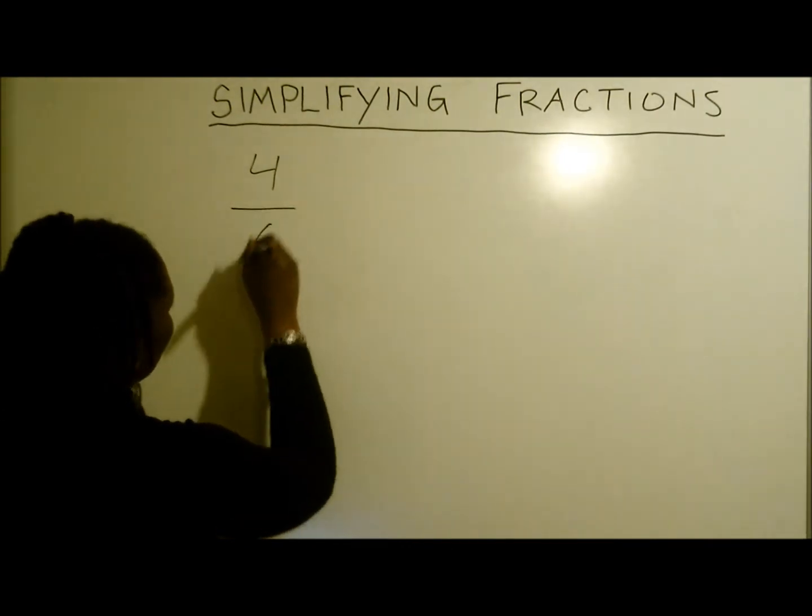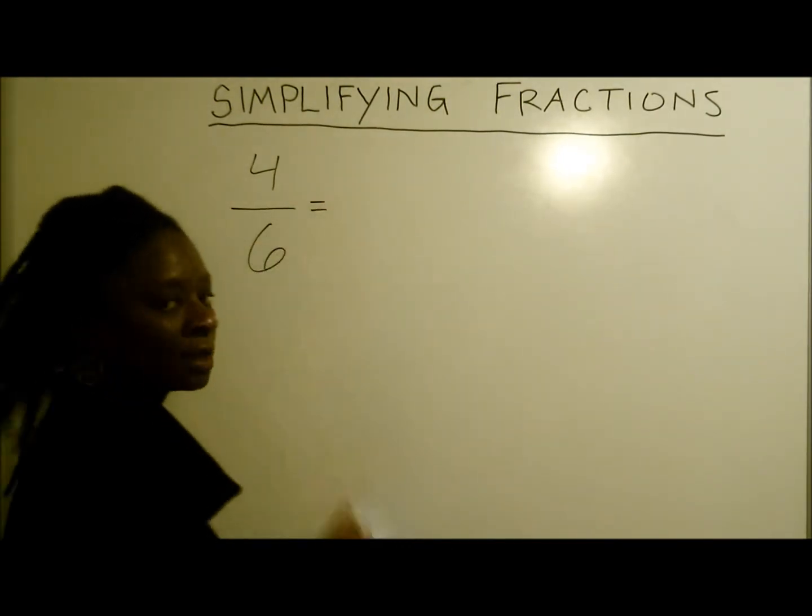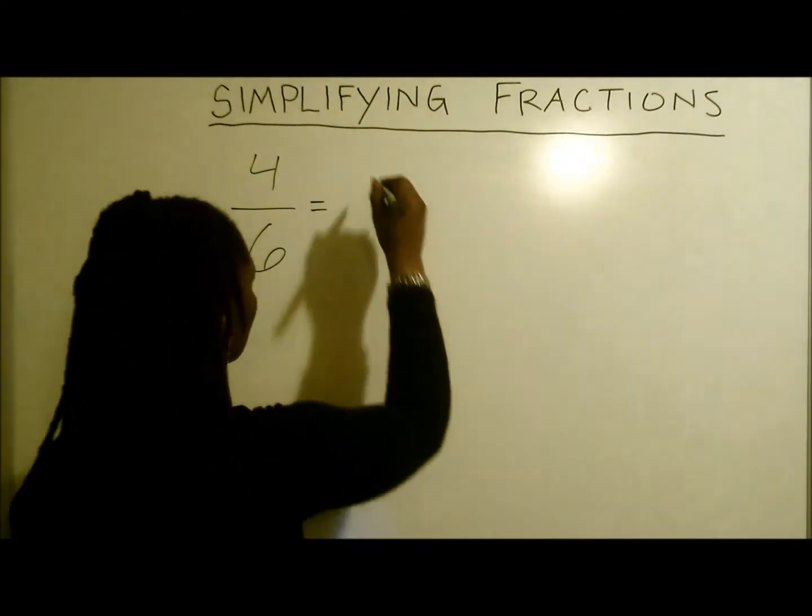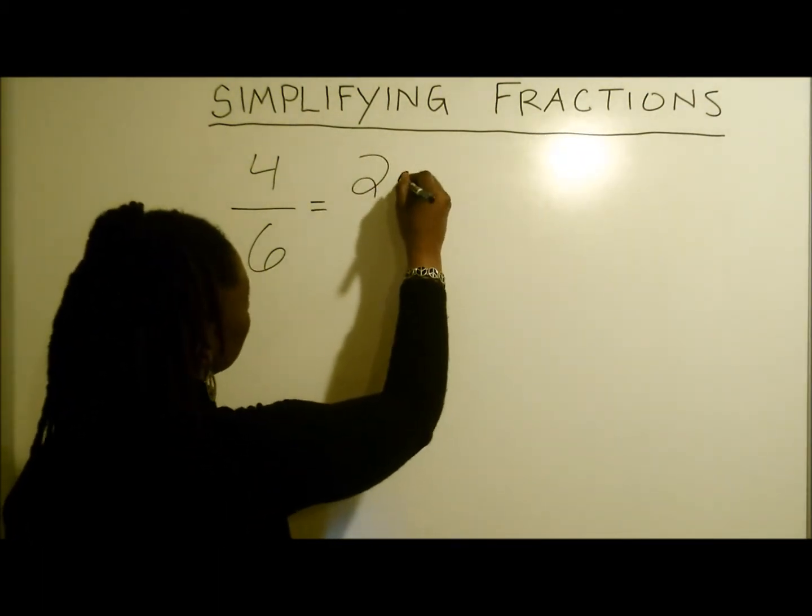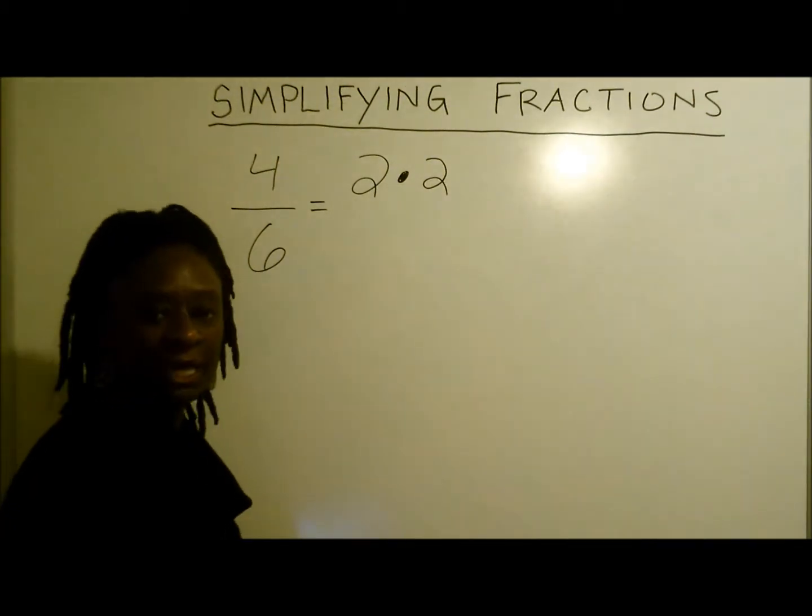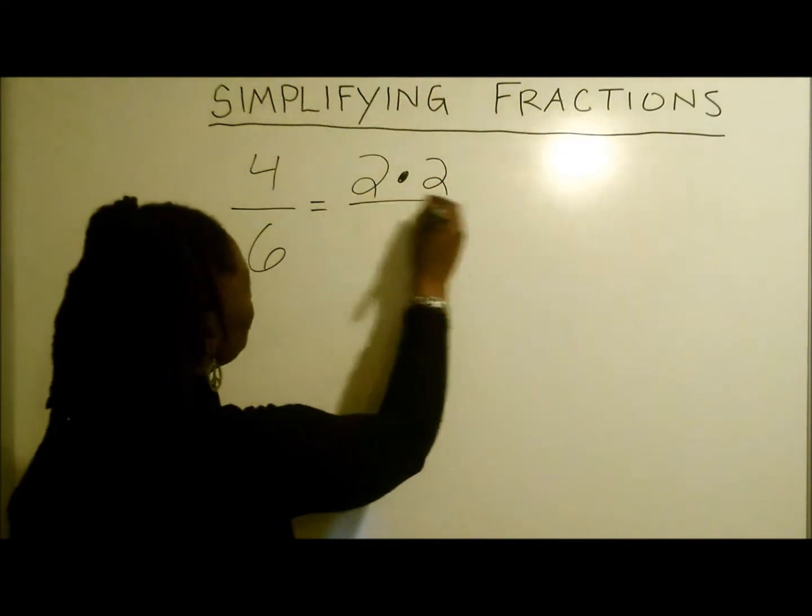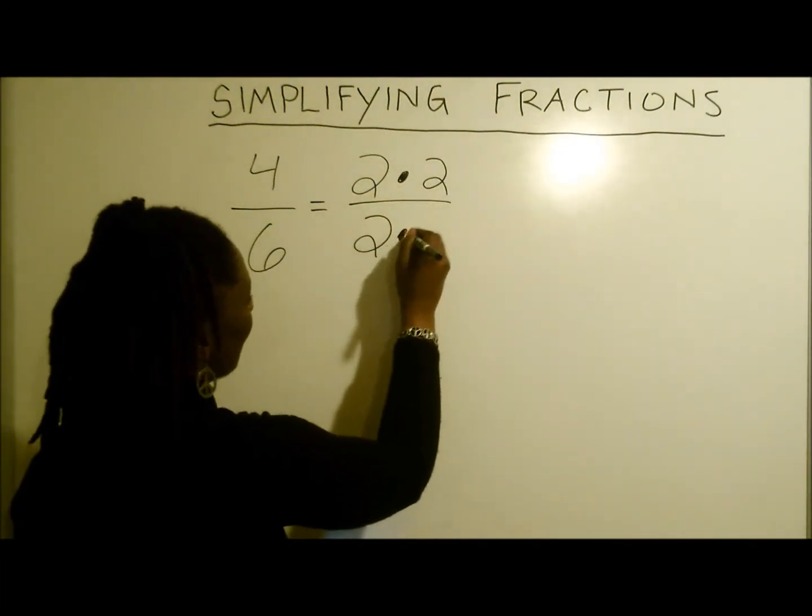We'll take 4 over 6 for example. Now our first step is to simply break these numbers down. We all know that 2 times 2 gives us 4. But what about the 6? You guessed it, 2 times 3.